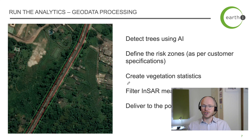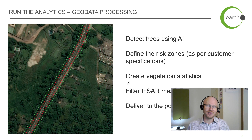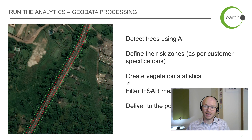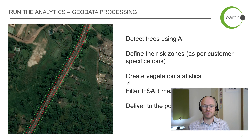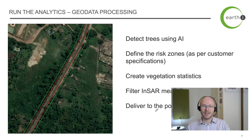We can also create statistics — the locations and the number of trees that need to be addressed — so you can estimate how long the line needs to be closed for maintenance. We also filter the ground movement measurements to make sure we're only getting the ones within the boundary of the line.